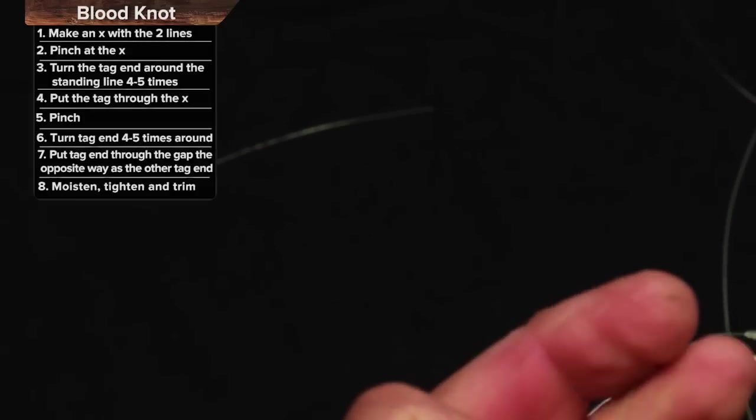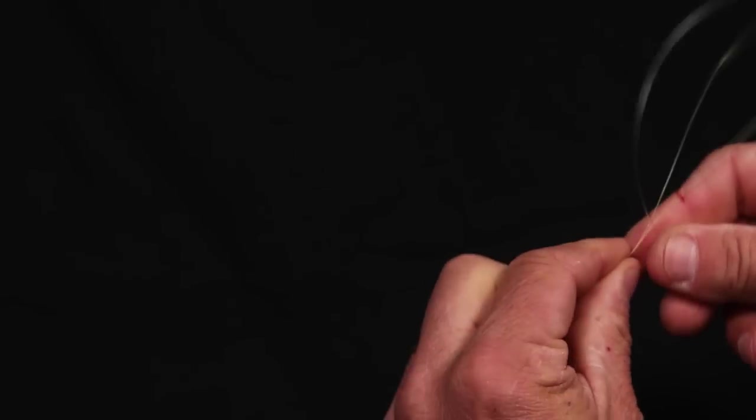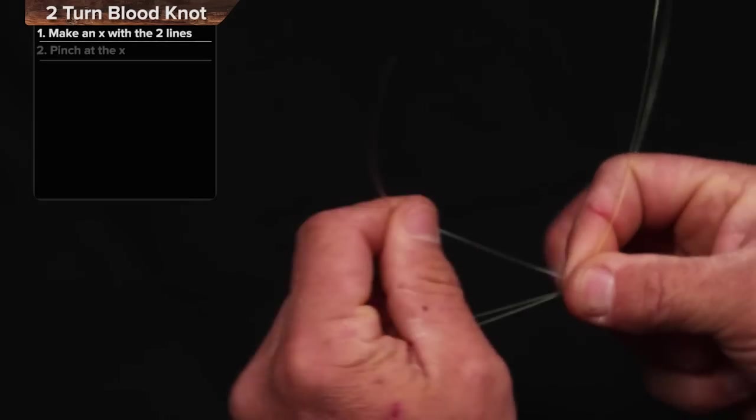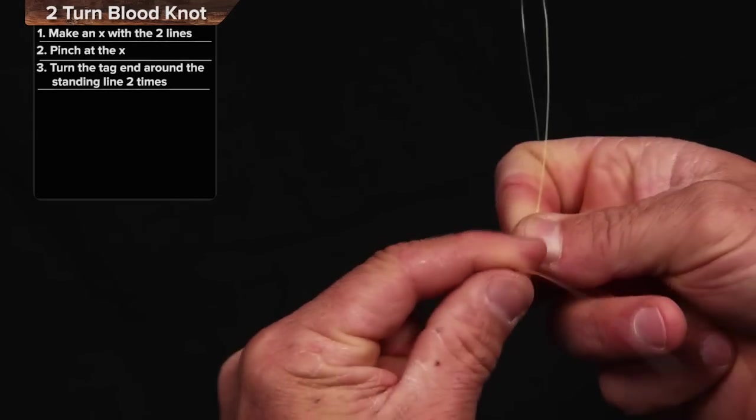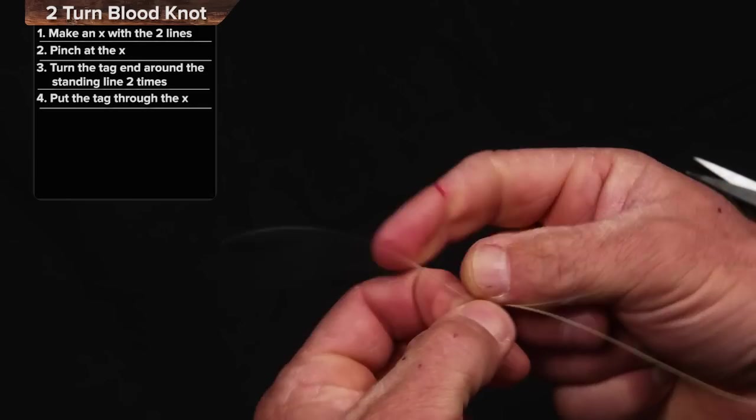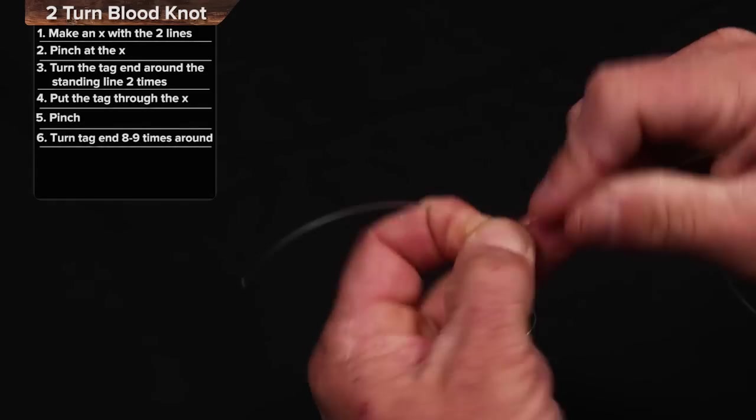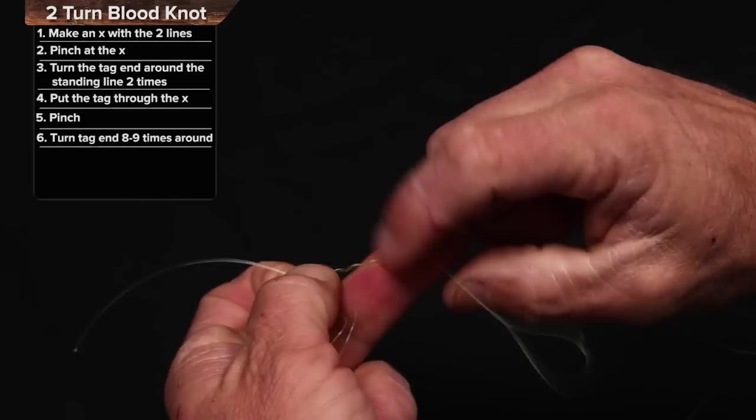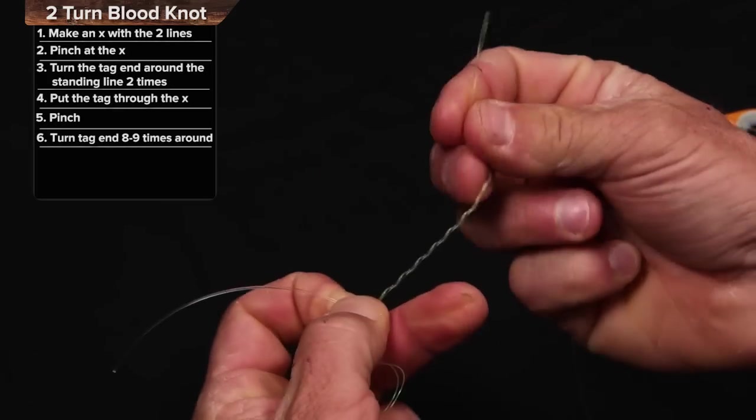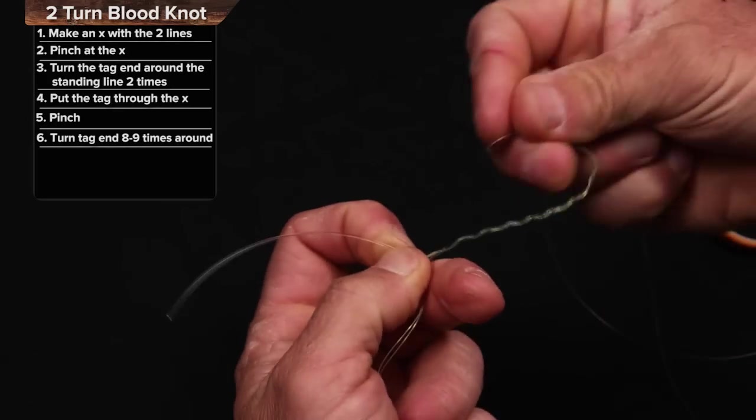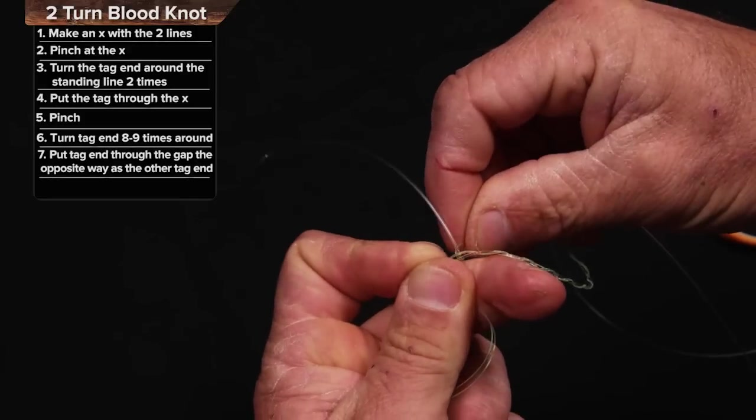If I want to see the two turn blood knot with monofilament or fluorocarbon, a 20 pound test fluorocarbon going to 80 pound test fluorocarbon for a tarpon leader and I'm going to go one, two. Put it right through there and then for this I'm going to wrap many more times. One, two, three, four, five, six, seven, eight times there. Put that right through the little gap.